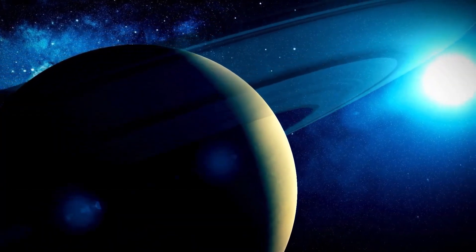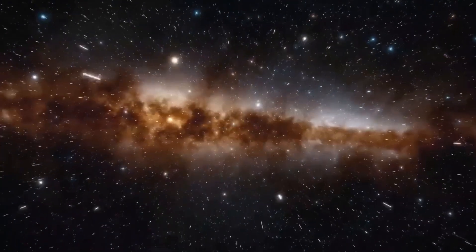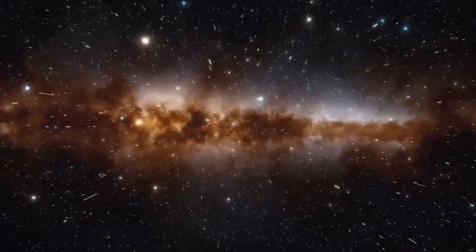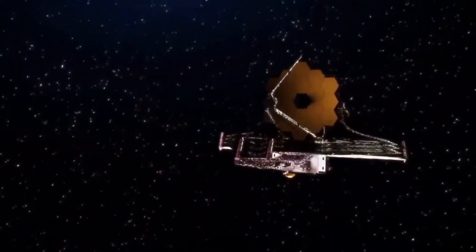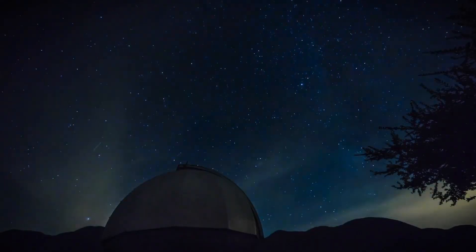However, the James Webb Space Telescope has the ability to observe beyond what any other technology has yet achieved. One of the most surprising discoveries made by this telescope is the existence of 700 galaxies inside a black hole. This finding challenged the conventional understanding of how black holes work.